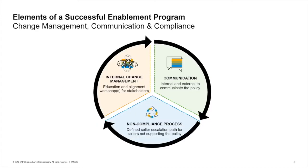There are three essential elements of a successful supplier enablement program. The first is internal change management for key stakeholders within your organization. The second is a robust communication plan for both internal and external messaging. And the third is a well-documented non-compliance process for suppliers who choose to not follow your organization's automation policies.